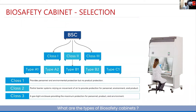Class 3 is an absolute gas-tight enclosure that protects people, the product, and the environment. These are recommended for use in BSL-3 environments based on risk assessment, and are definitely required in BSL-4 physical containment.